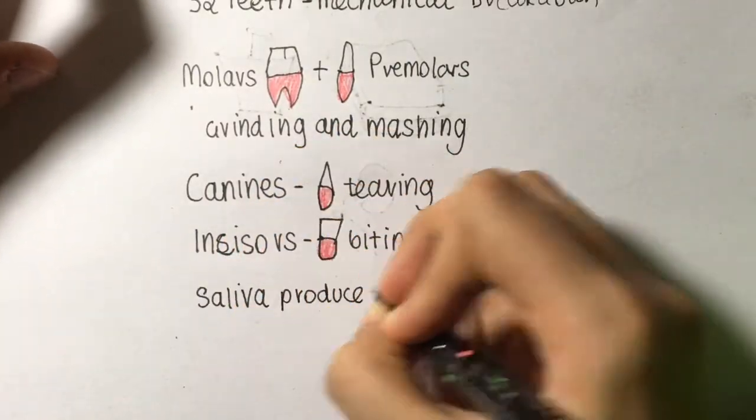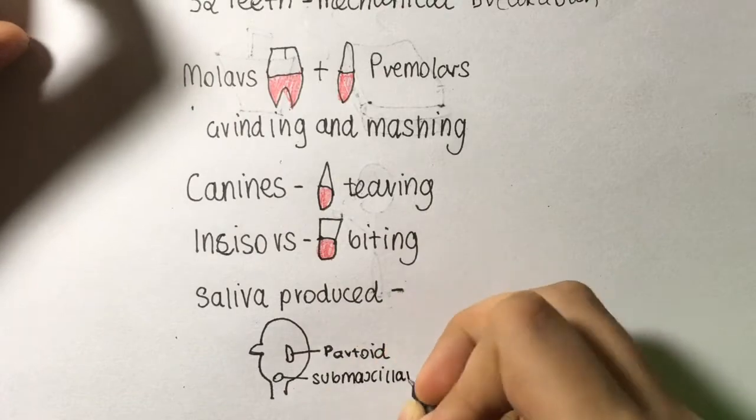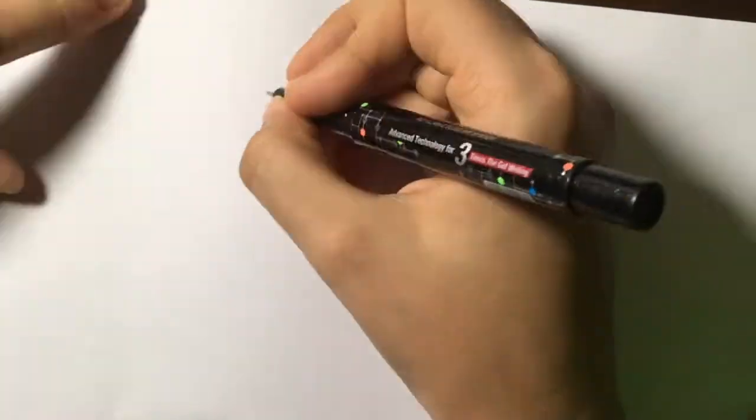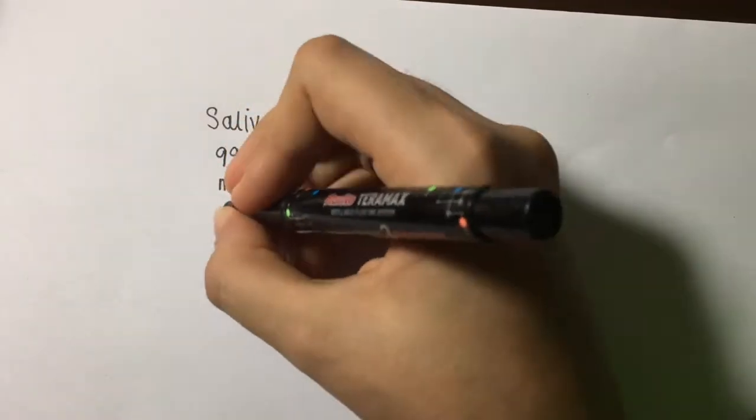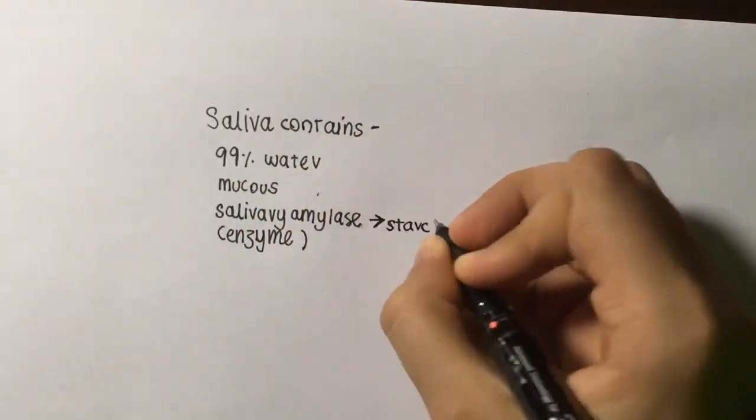Saliva is produced in three glands: the submaxillary, parotid, and sublingual glands. Saliva contains 99% water, but it also contains mucus and salivary amylase, which is an enzyme. Salivary amylase breaks down starch into maltose. This is why bread tastes sweet after chewing it for a while.